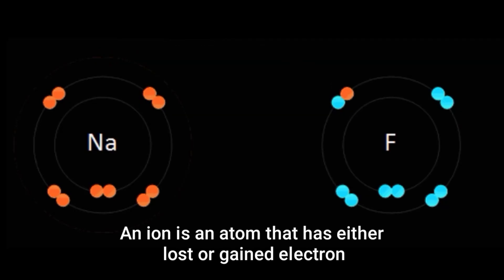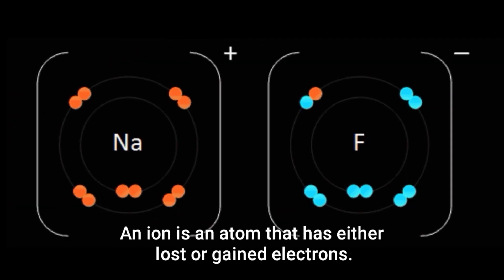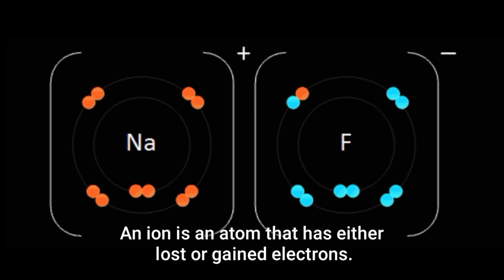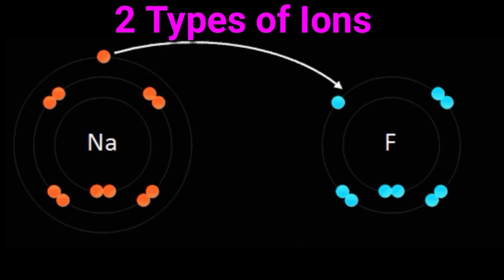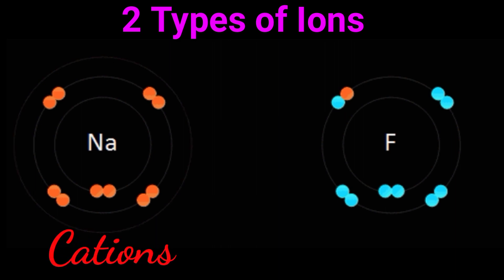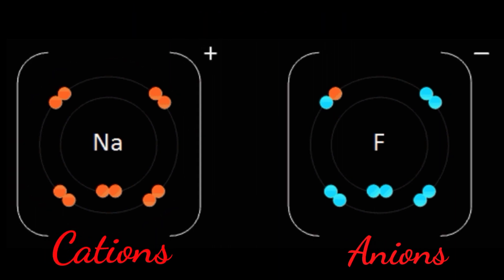An ion is an atom that has either lost or gained electrons. There are two types of ions: cations and anions.